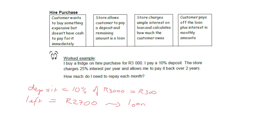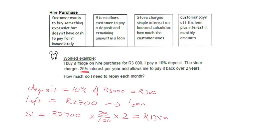When somebody gives you a loan they charge you interest. With hire purchase the store charges simple interest on the loan. In this case they lend me 2,700 rand and charge 25% simple interest for two years. The simple interest on 2,700 at 25% for two years works out to 1,350 rand — so just in interest I'm going to pay 1,350 rand.